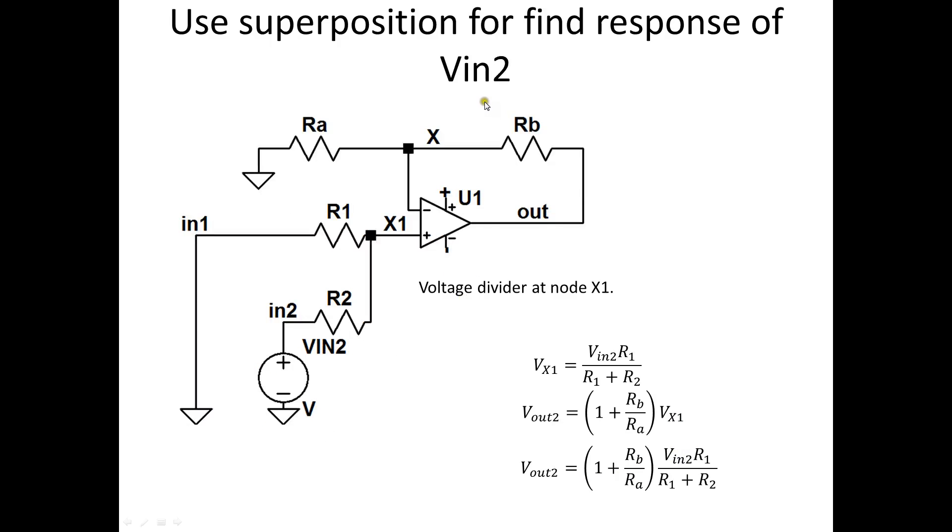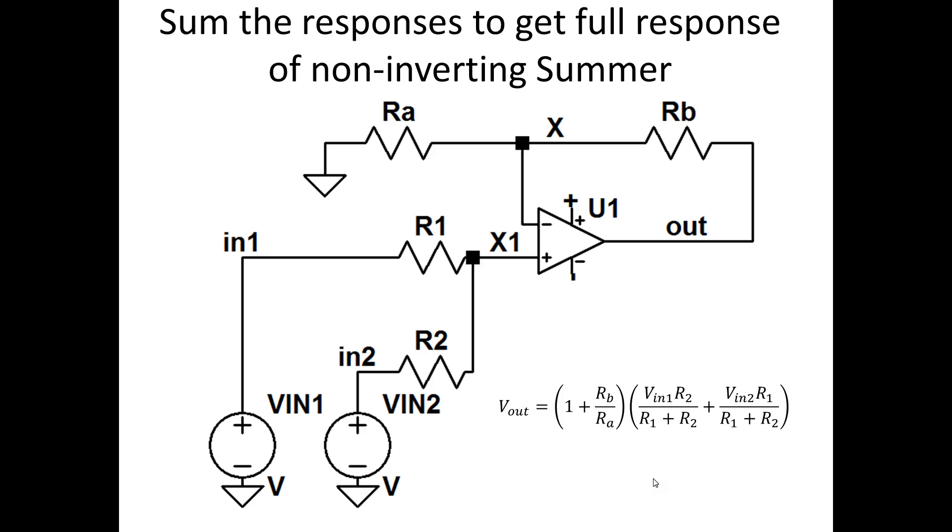And we can find Vin2 the same way. We short Vin1, but now the voltage division is going the other way. The voltage drop on x1 is across R1. So Vx1 equals Vin2 R1 divided by the sum of R1 and R2. And when we substitute that into the gain equation for the voltage at Vx1, we get the full output response of Vout2. And then when we sum them together, we get this response.